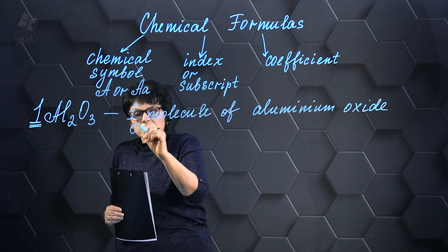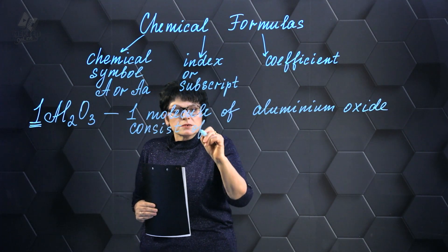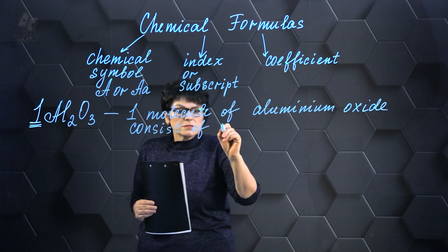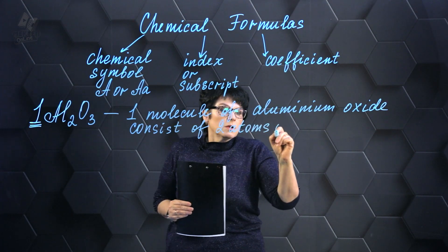In this specific case, it consists of a total of 2 times 1, which is equal to 2 atoms of aluminum, an element denoted by the symbol Al, and having an atomic number of 13, renowned for its lightweight nature and resistance to corrosion.